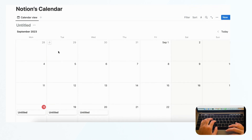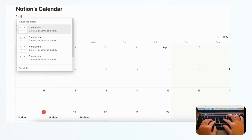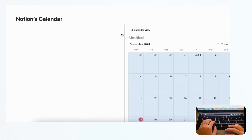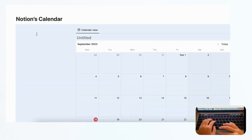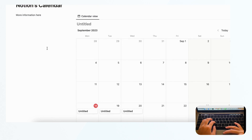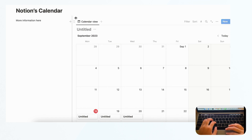Another strength is that you can make the calendar part of your workspace. For example, using slash column you can create two columns and move the calendar into one column, then add more information alongside it. You can easily set up a personal page workspace with a calendar you can edit on the side — everything is very versatile.